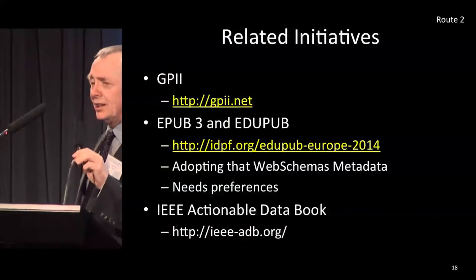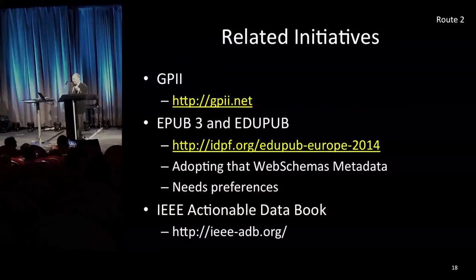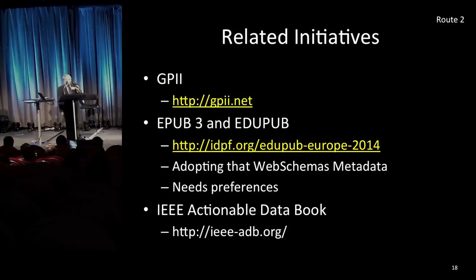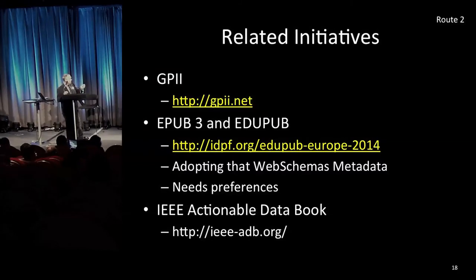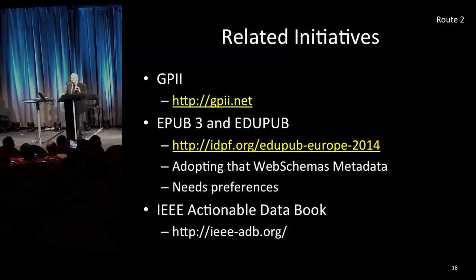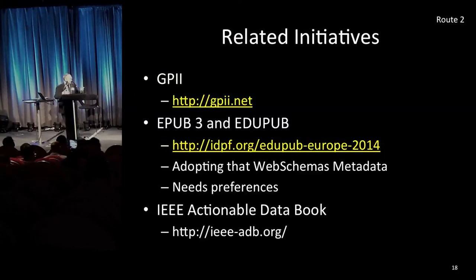Related initiatives: GPII — Global Public Inclusive Infrastructure — is implementing preferences, metadata, and matching engines across devices and platforms that works with all this stuff. There are initiatives in EPUB 3, which is based around HTML — they're adopting that web schema metadata I just showed you and will be adopting 1.1 as well. It needs the preferences to go with it. IEEE Actionable Databook is a project implementing prototypes of adaptation of preferences for e-books. E-books are going to have videos, audio, animations, little games, and assessments in — they need to adapt to individual preferences.